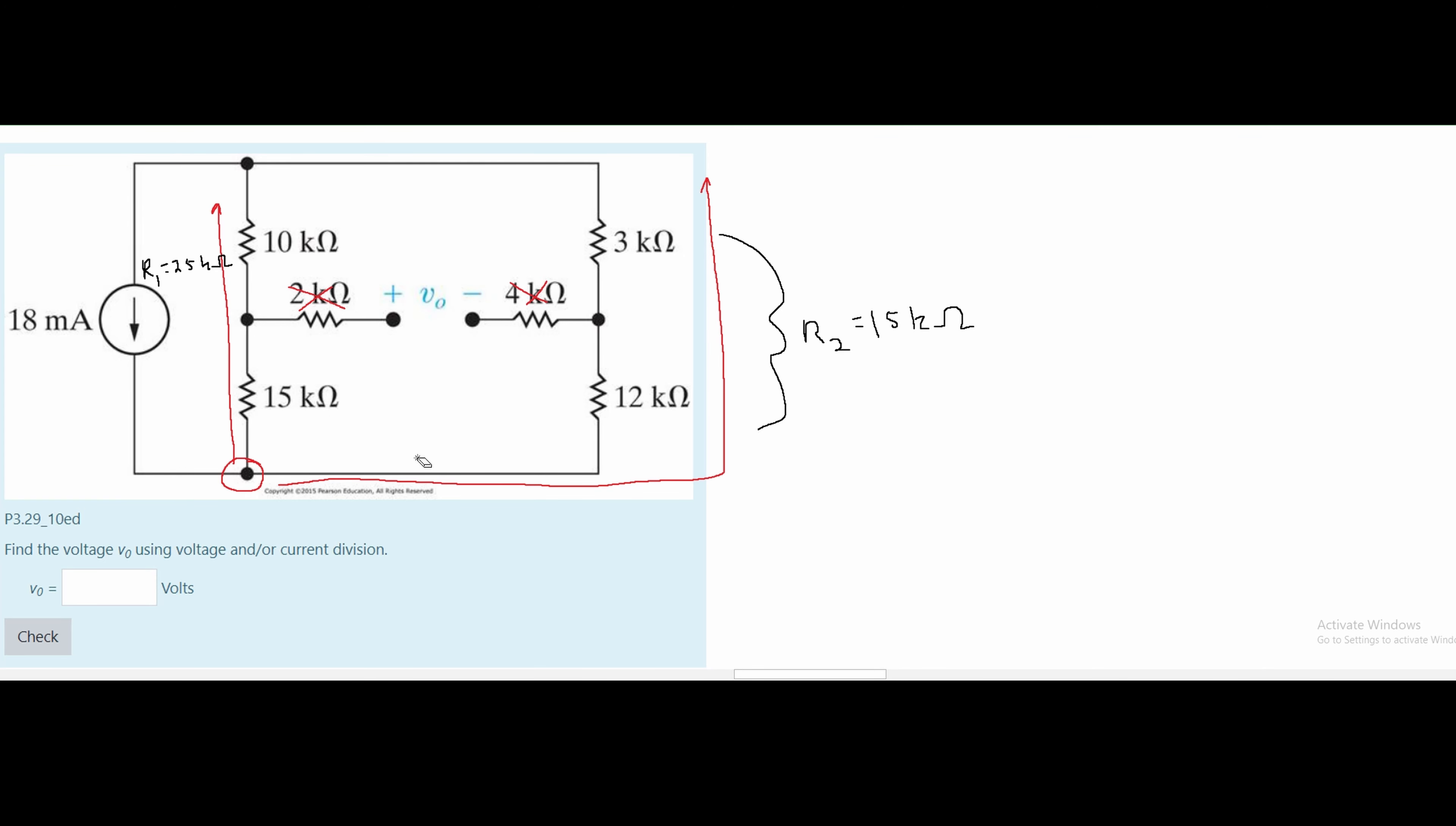To find the current going through here, since we have this node right here, that means our current is splitting in parallel and we're going to use the current division formula. That formula looks like this: I2 equals R1 over R1 plus R2 times IS. We call this current I1 and we're calling this current I2 to stick with our R1 and R2. We have to stay consistent.